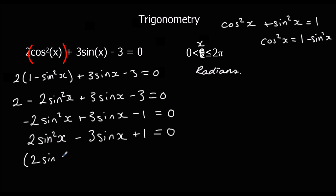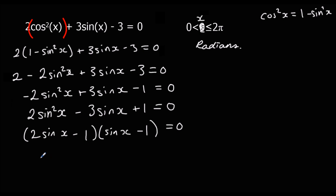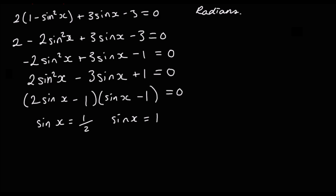This is a familiar-looking quadratic. I'm going to factorise it as (2sinx − 1)(sinx − 1) = 0. So sinx = 1/2 (making the first bracket zero) or sinx = 1 (making the second bracket zero).